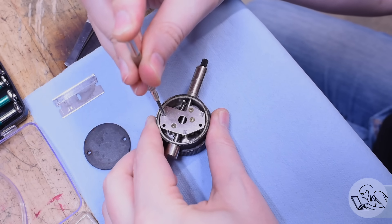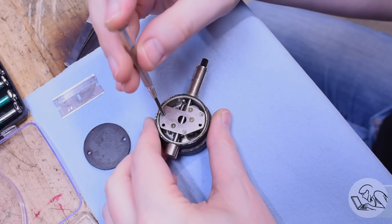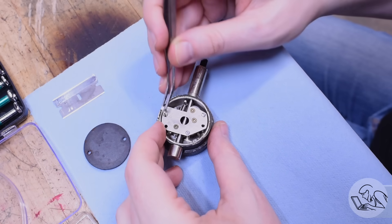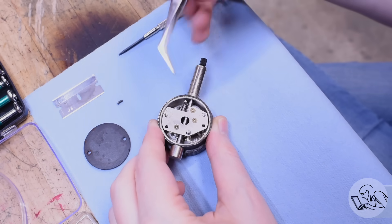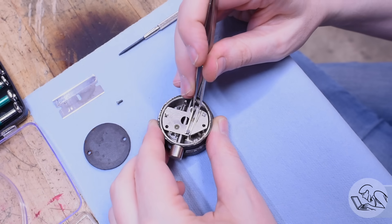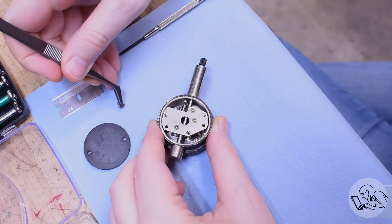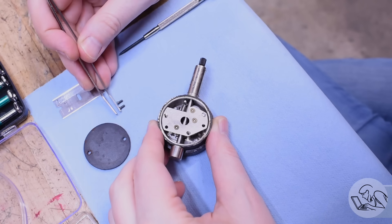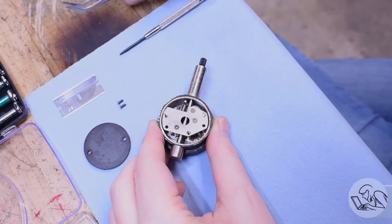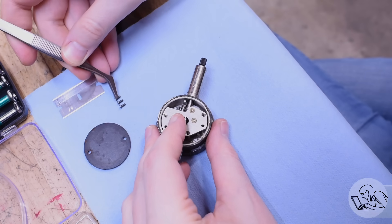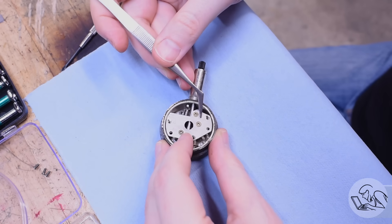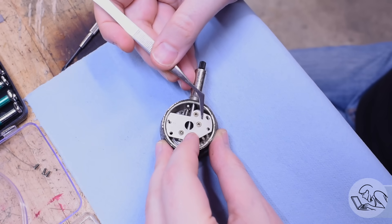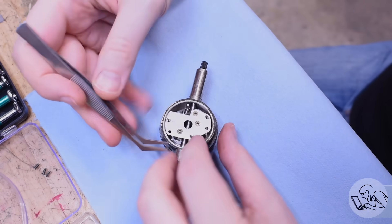This top frame here, or bridge as I believe it's properly called in pocket watch terminology, is removed with three screws. Now I'm sure I'm going to anger and enrage all of the watchmakers and clockmakers out there, so bear with me as I fumble my way through this. And you want to work on a soft surface to keep things from rolling around and to protect the bezel from being scratched and things like that. Now that bridge lifts off, and that's holding three axles that you can see there. You can see the backs of three bearings.